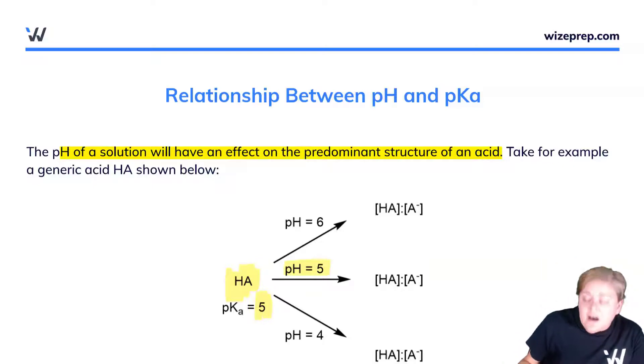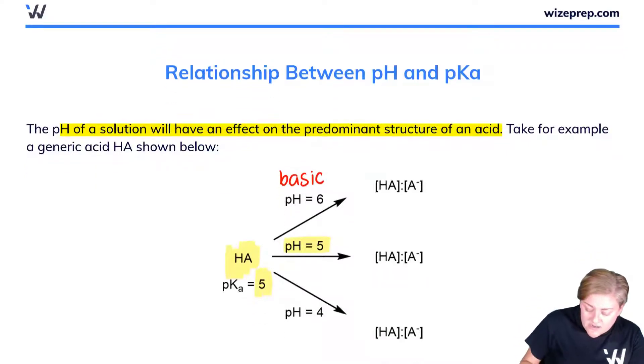Here I have a pH of 5, where I have pKa is equal to pH. Up here, I have a pH of 6. This would be considered more basic. And down here a pH of 4 would be considered more acidic.